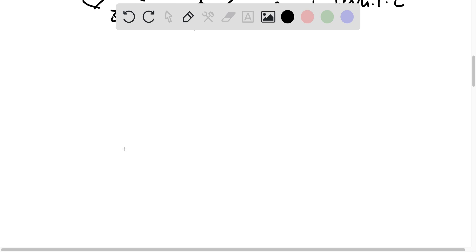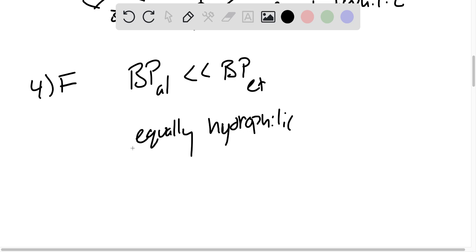Alcohols have much lower boiling points than ethers. Well, we could pretty much stop right there. Anything else they say won't make that true. But both are equally hydrophilic. This is also not true for the reasons we discussed above. So four is false. Alright. Final question.